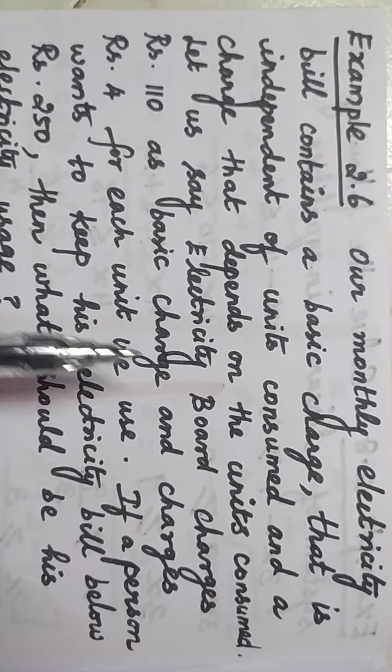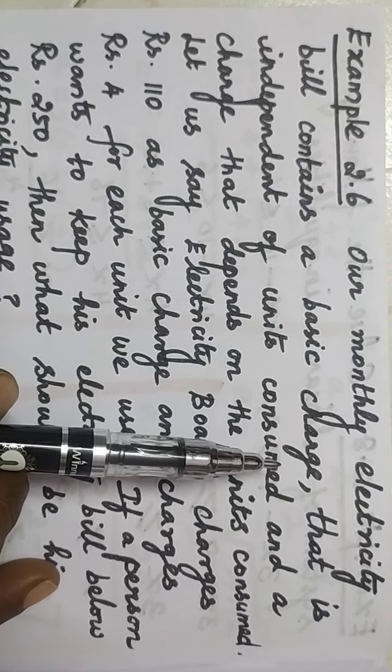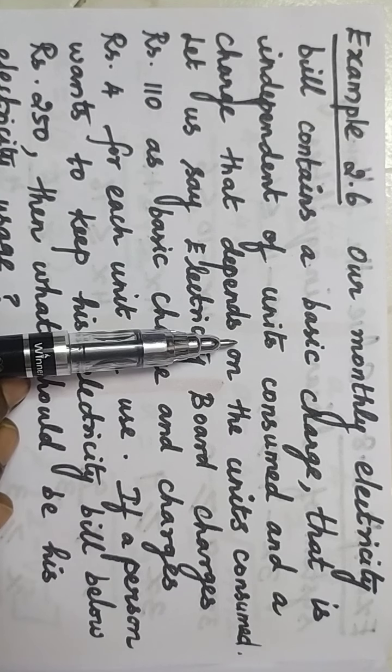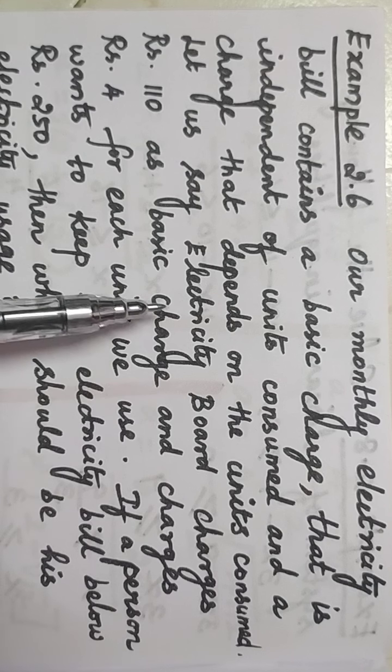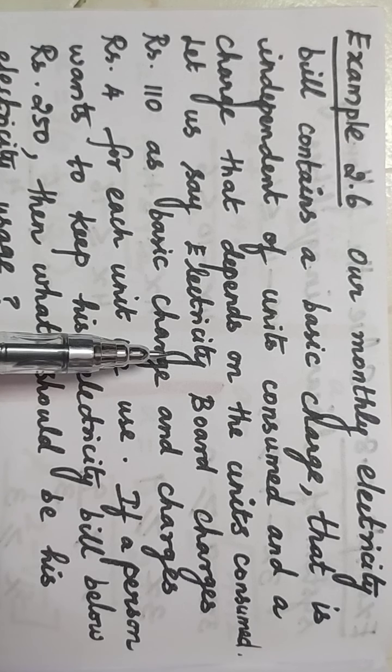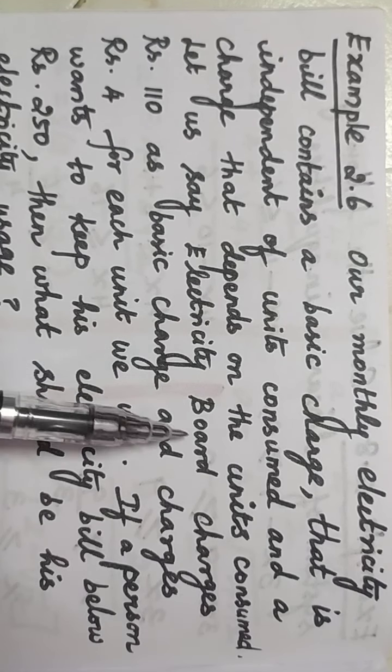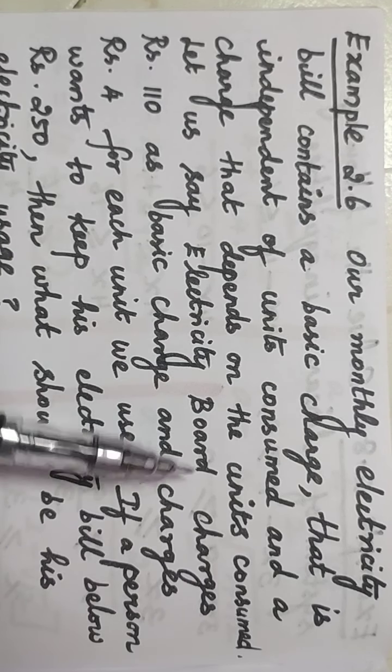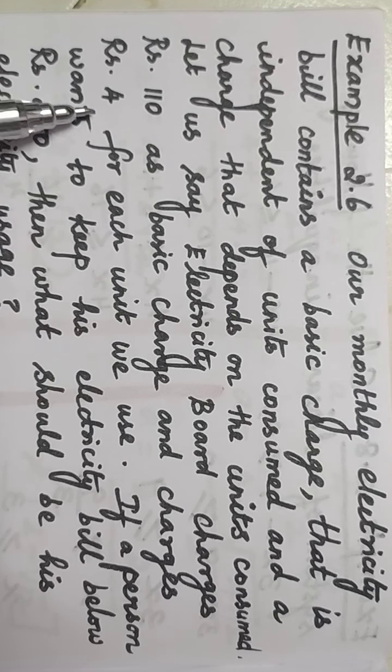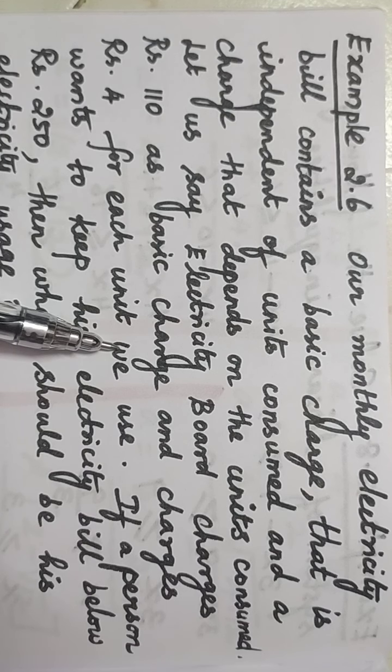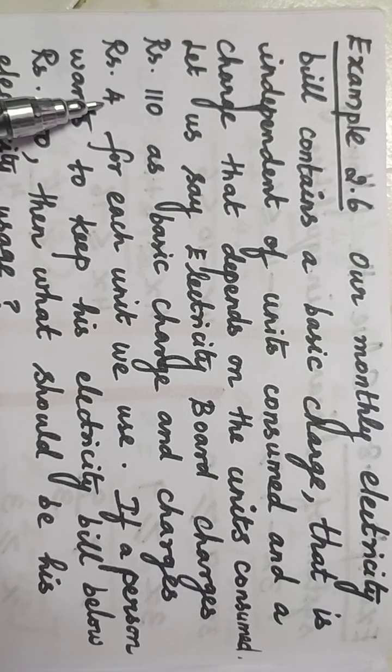Electricity bills have a basic charge, plus a charge based on units used. The electricity board charges 110 rupees as basic charge and rupees 4 for each unit, other than the basic charge. So one unit is rupees 4 charge.